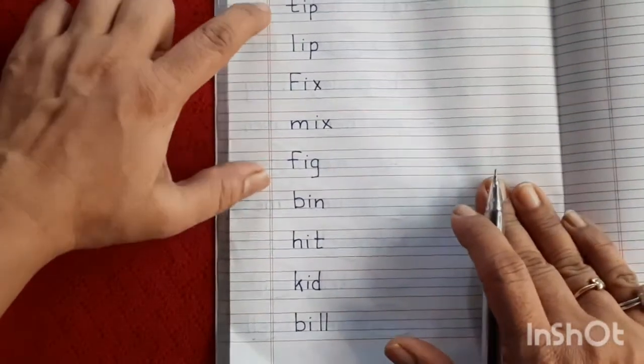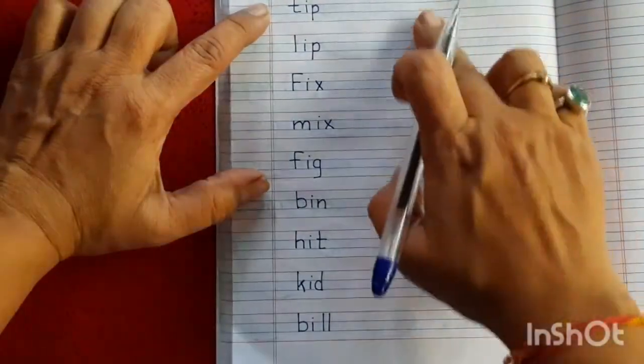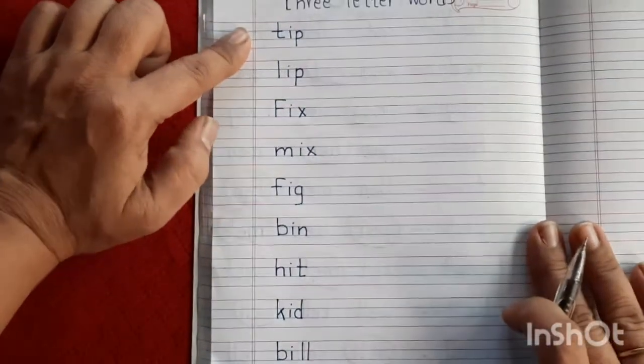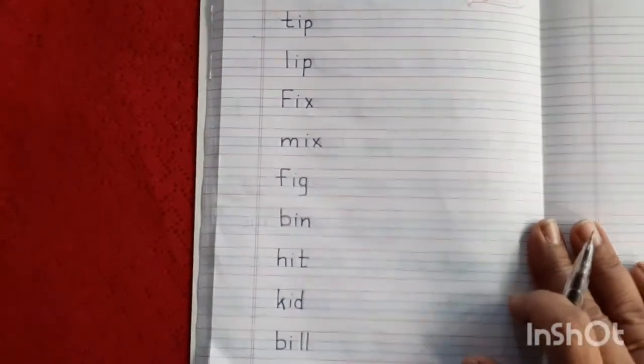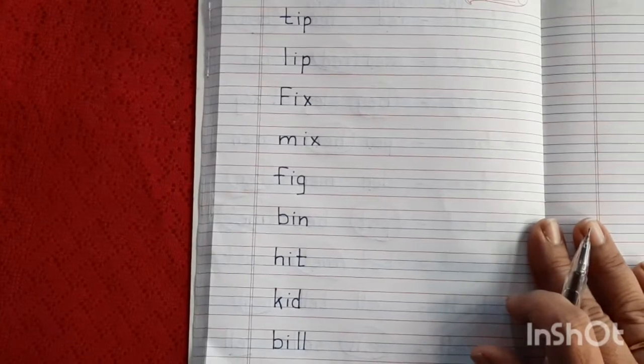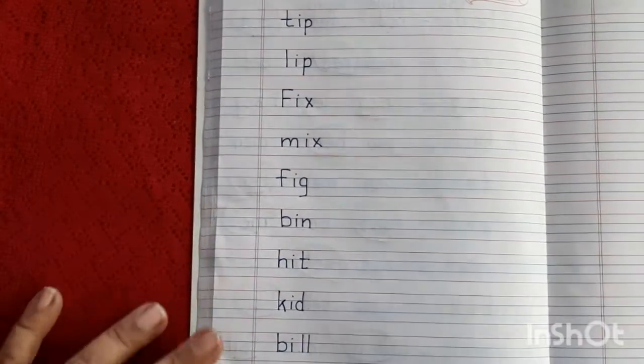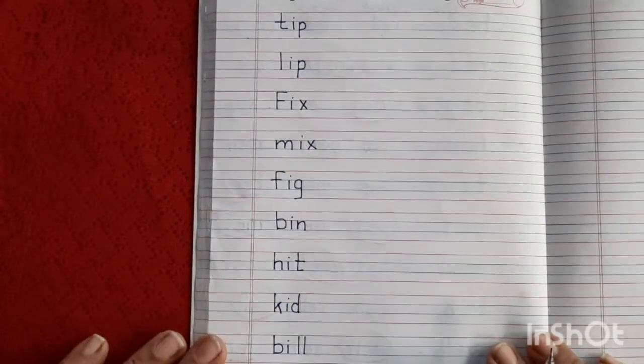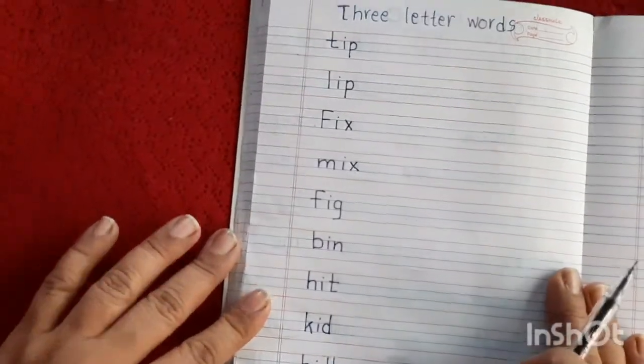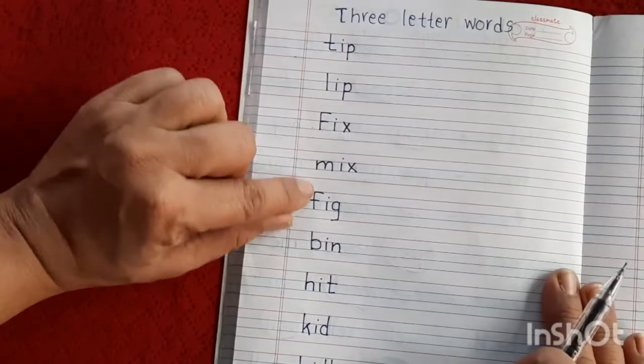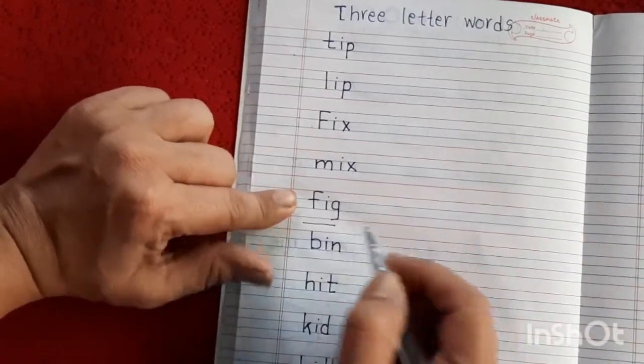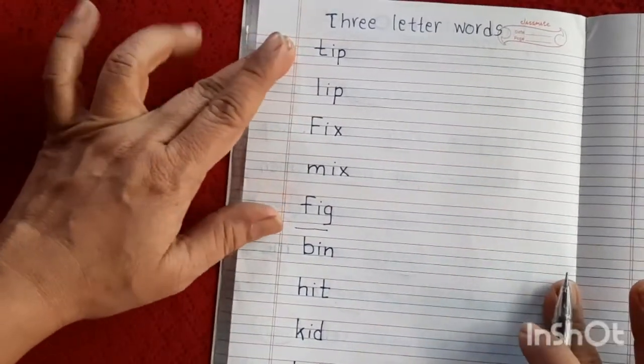આજે તમારી નોટબુક મા, ફુલ લાઇન તમારે રાઇટ ડાઉન કરવાનું છે. અને હા, જયારે પન તમે રાઇટિંગ કરો, ત્યારે કમ્પલ્સરી બોલી ને લખવાનું છે. Okay, so now,